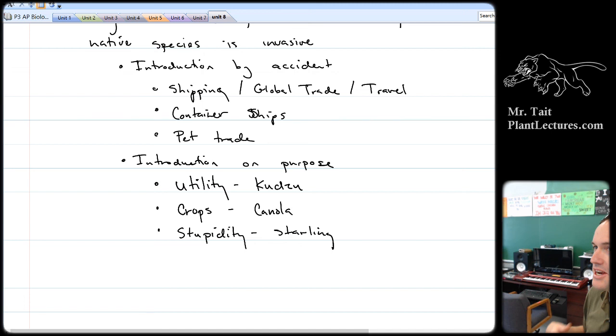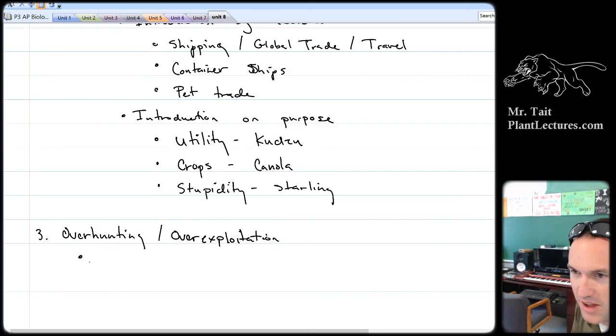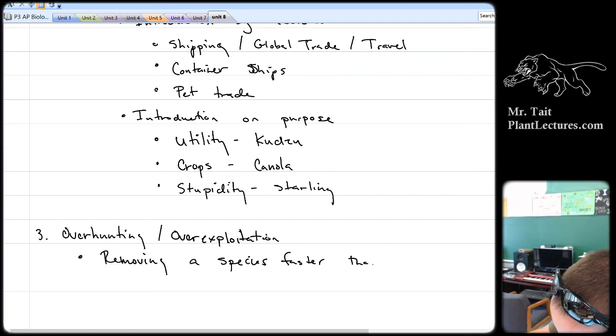There's other reasons though: over hunting, over exploitation. This one's pretty obvious. If you remove a species at a greater rate than it reproduces, it will die. It will go extinct. Over fishing is when you remove the fish at a greater rate than they can reproduce. Over hunting, you kill the thing faster than it can reproduce. What do we do to mitigate this? Hunting seasons and limits.